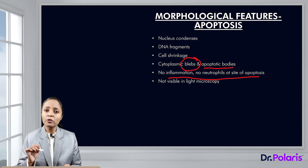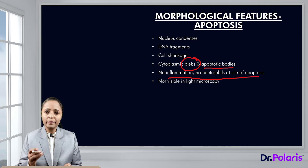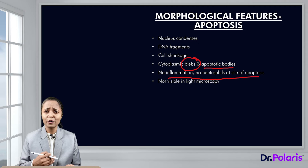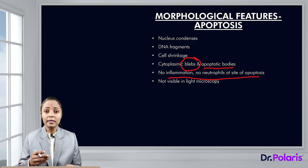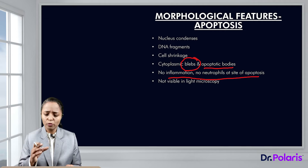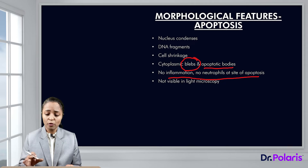Even though apoptosis is a regular process occurring in various tissues throughout the body, if we take a sample and look at it under microscopy we will not be able to identify apoptosis since there are no neutrophils and no inflammation at the site. On the other hand, in necrosis, cells swell, burst, release their contents, affect surrounding cells, and there are neutrophils coming to the site. So necrosis can be easily identified by light microscopy, which we actually do for diagnosis when we take a biopsy.